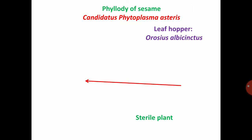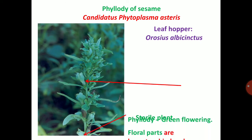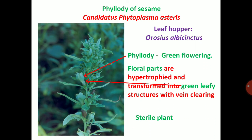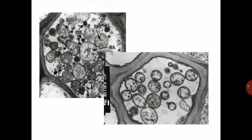Next, phyllody of Sesame — caused by Candidatus Phytoplasma asteris, mainly transmitted through Orosius albicinctus. Phyllody means green flowering — flower parts are hypertrophied and transformed into green leaf-like structures with vein clearing. The flowers become sterile and the plant becomes sterile.